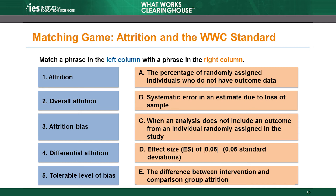The second term listed in the left column is overall attrition. The correct answer is A: the percentage of randomly assigned individuals who do not have outcome data. How about the third term, attrition bias? The correct answer is B: systematic error in an estimate due to loss of sample. Keep in mind that bias is not something that reviewers calculate. Reviewers calculate attrition rates, and those rates lead to different levels of expected bias, as indicated by the WWC attrition model.